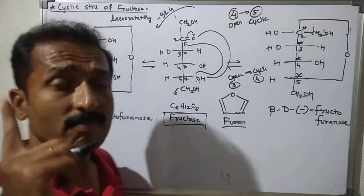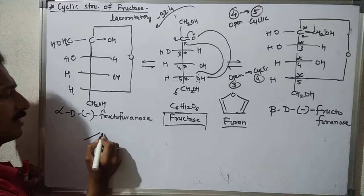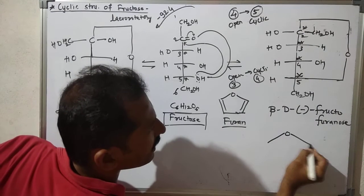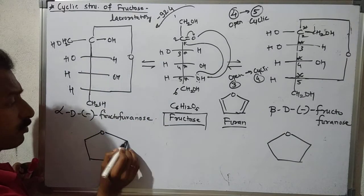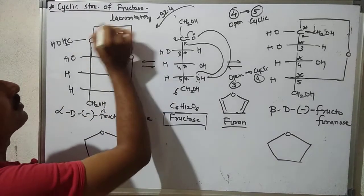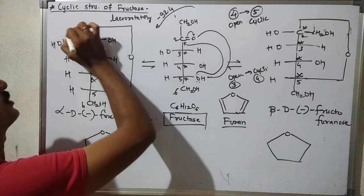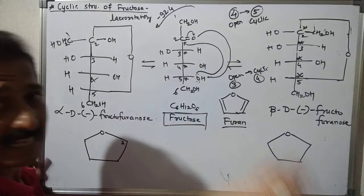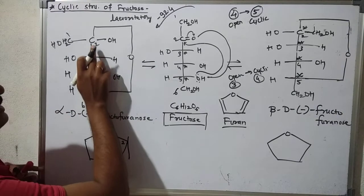One extra chiral center is added because of the attack of the lone pair of oxygen on the carbonyl carbon. In the furanose ring structure, it also acts as a plane — you draw the ring as a plane. The adjacent carbon of oxygen is denoted as carbon 2 — it is the anomeric carbon.